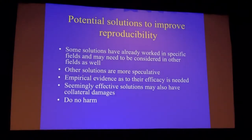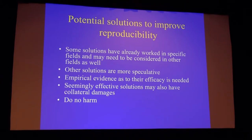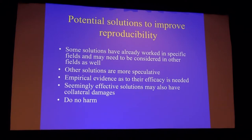This leads to the solutions part. We are not desperate — we have lots of solutions. Science has made great progress. Some solutions have already worked in specific fields and may need to be expanded to others. These 200,000 clusters of scientific fields — some communicate with each other, but others do not — and maybe we have plenty of room to learn from each other. Other solutions are more speculative, and you should ask for evidence before adopting them, since some of these solutions may actually do more harm than good. We need an evidence base before we decide to change everything.